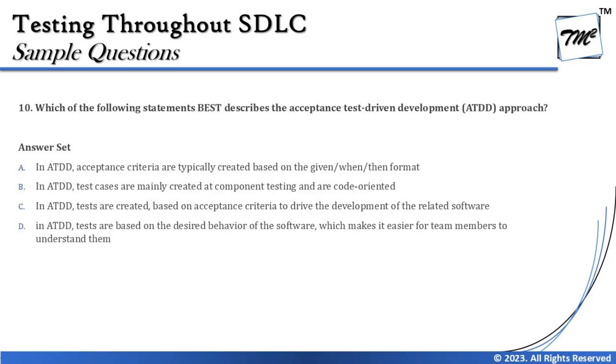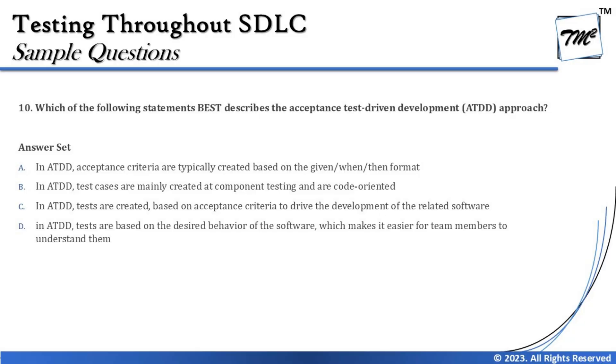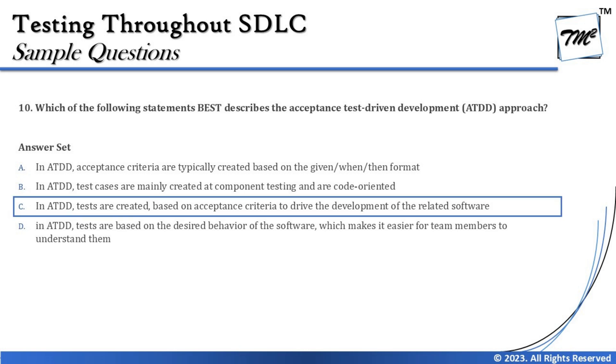Option D says: in ATDD, tests are based on desired behavior of the software, which makes it easier for team members to understand them. That describes BDD — behavior driven development — which is written in natural language so any stakeholder can understand it. Comparing A and C, option C makes more sense because ATDD is about deriving test cases from acceptance criteria based on which the code will be written. The right answer for question 10 is C.